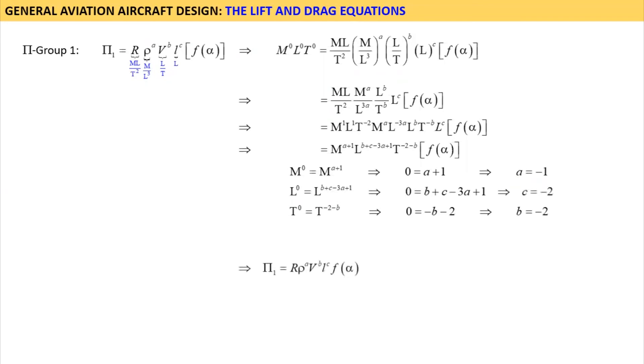Now, we rewrite pi group 1 as shown here. Pi 1 was equal to R times rho to the power A times V to the power B times L to the power C times the dimensionless function of alpha. Substituting the values of A, B, and C leads to this, which we can also write as that. This, in effect, means that the aerodynamic force R is equal to rho times V squared times length squared times the dimensionless function of alpha. L squared implies area.